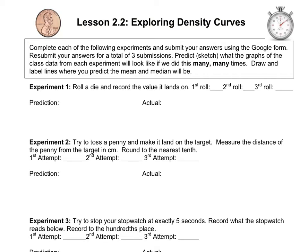Since we're doing this in a lesson video instead of face-to-face, we're going to run it a little bit differently than the original intention. What we want to do is collect some data using the following experiments. Each one of us is going to perform the task three times and then record our data. Then we want to sketch what we predict the results from each experiment would look like if we ran the experiment many times. And then we want to draw and label the lines where we would expect the mean and median to be.